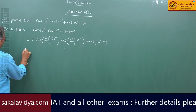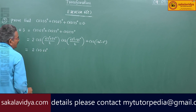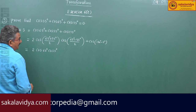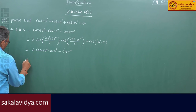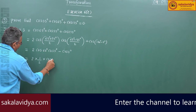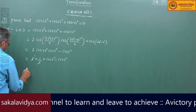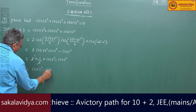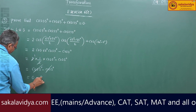This equals 2 cos(120°/2) cos(10°/2) minus cos5°, which is 2 cos60° cos5° minus cos5°. Since cos60° = 1/2, we get 2 × (1/2) × cos5° minus cos5° = cos5° minus cos5° = 0, which is the RHS.